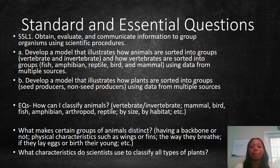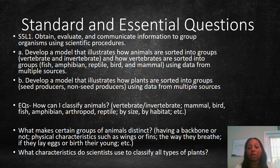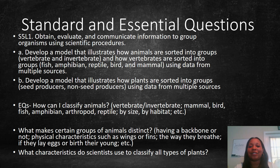Part B says: develop a model that illustrates how plants are sorted into groups — seed producers and non-seed producers — using data from multiple sources. Our essential questions for this unit are: how can I classify animals, what makes a certain group of animals distinct, and what characteristics do scientists use to classify all types of plants? So get comfortable, get out your notebook, and get ready to take lots of notes.